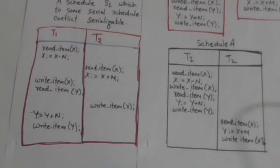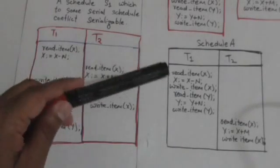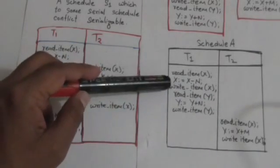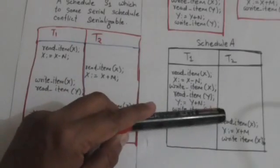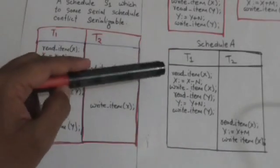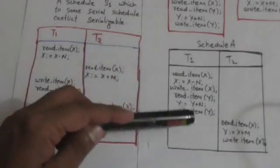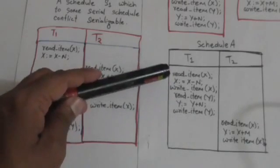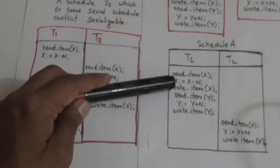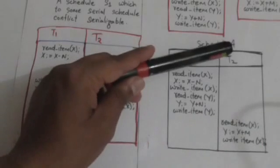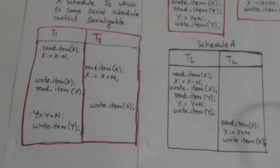Here we have two schedules — one is a serial schedule and one is a non-serial schedule. We have to check whether they are conflict equivalent to each other or not. Consider these two conflicting operations: write item X of transaction T1, and read item X of transaction T2. In the serial schedule, the write operation of T1 is performed first, and after that the read item X of T2 is performed.